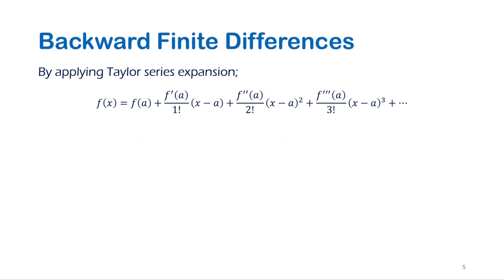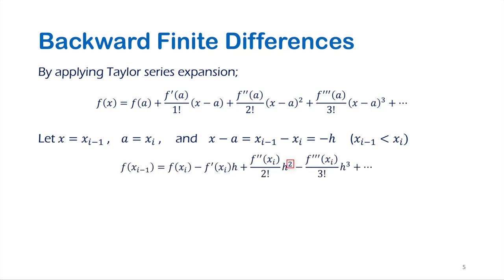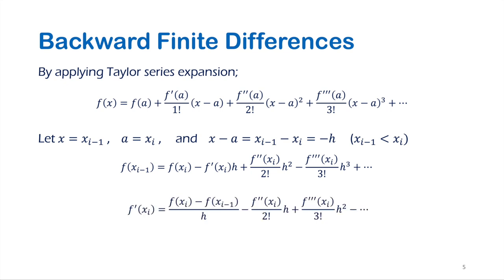The derivation of the backward finite differences is similar to that of the forward differences, but by using x_i minus x, which is actually smaller than x_i. Consequently, it results in negative h. Since h is always set in the finite differences method as a positive quantity, its negative sign is given to the terms it is multiplied by, except when the power of h is an even number. From this point, the remaining steps are the same and the order of the error as well.